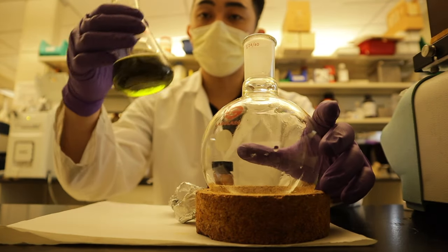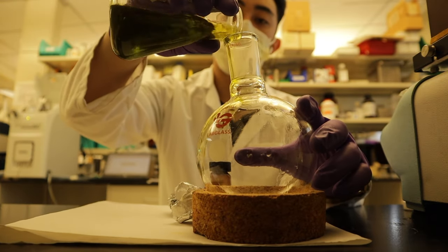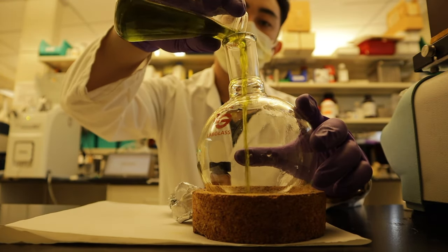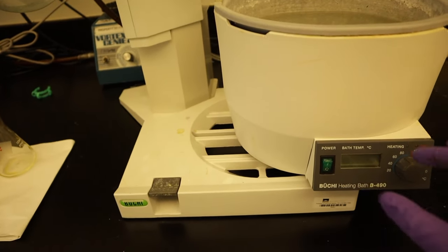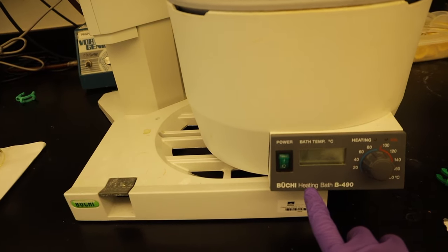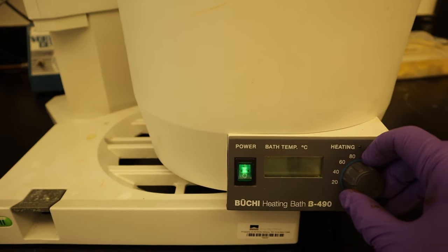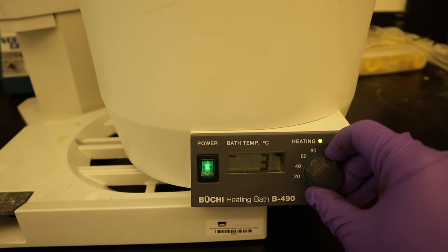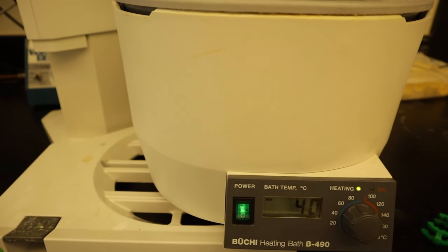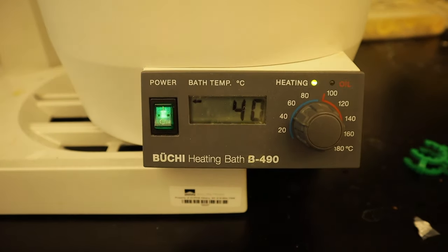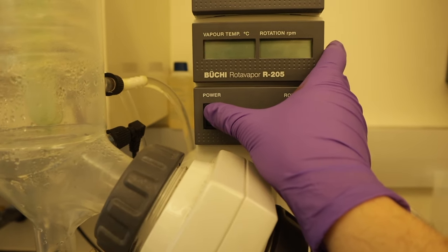First, we'll be transferring this solution in this round flask. The next step is to turn on the heating bath. Set it at about 40 degrees. And then turn on the rotary evaporator.